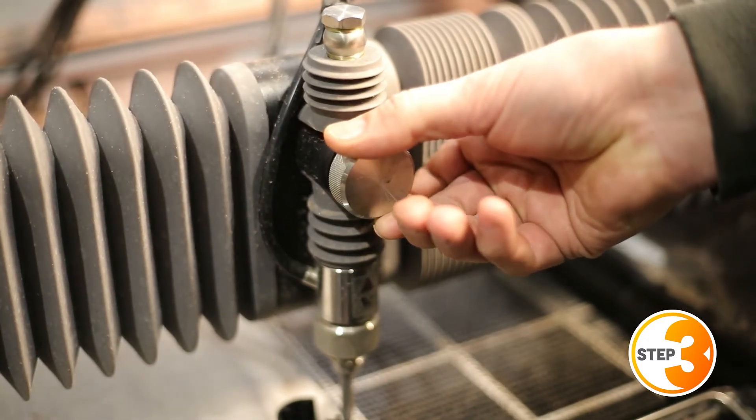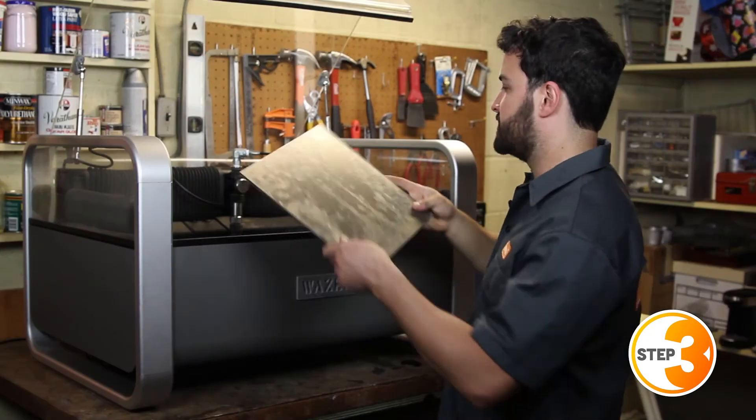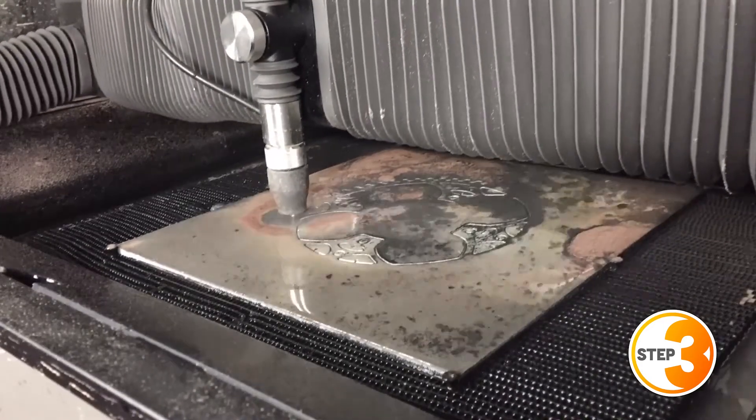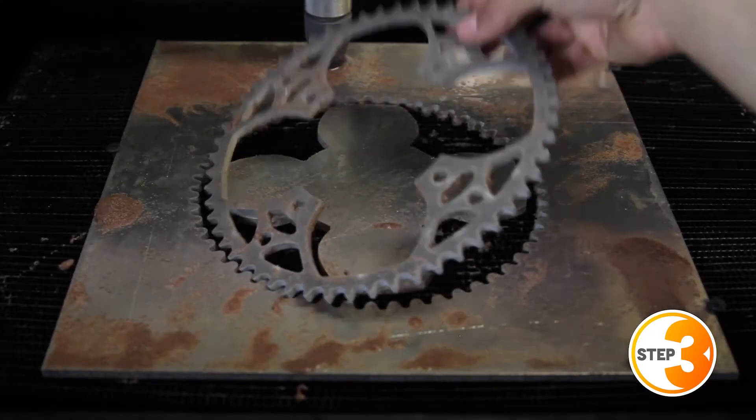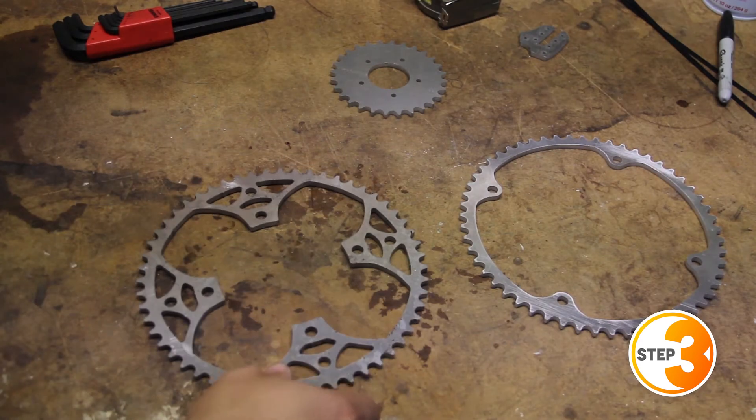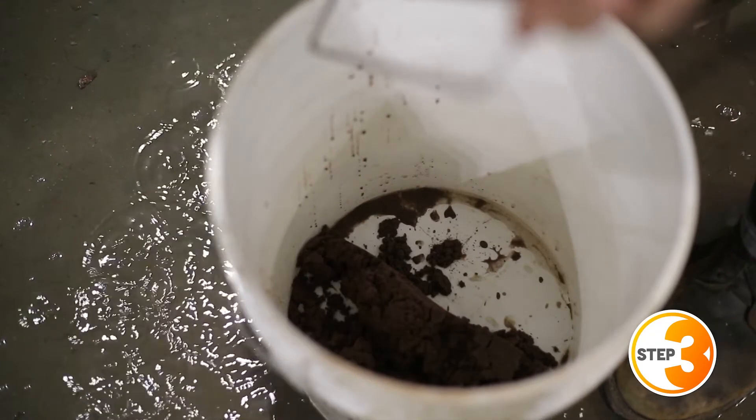Step 3 is cutting, and this is the best step of all. Simply load your material and let the Wazer begin cutting. Once completed, remove and admire the finished piece. Finally, empty the used abrasive from the Collection Hopper. That's it.